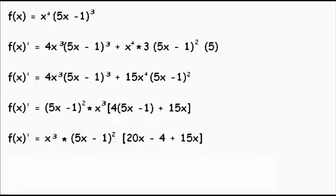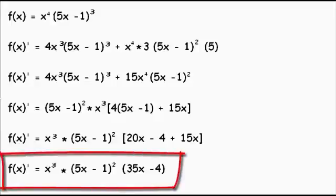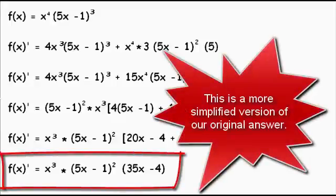And if we gather all our terms, we are left with x cubed multiplied by 5x minus 1 all squared multiplied by 35x minus 4, which is exactly what we had in our previous answer.